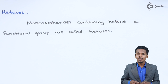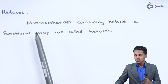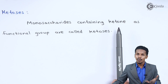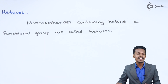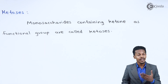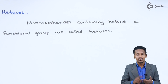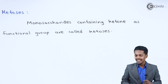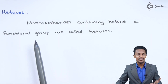The other type of Monosaccharide is Ketoses. Monosaccharides containing a ketone group (C=O) as the functional group are called Ketoses. They are further divided into Ketotrioses, Ketopentoses, Ketotetroses, and Ketohexoses. More detail on this will be covered in a future lecture.